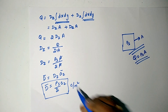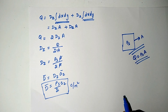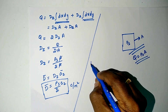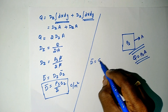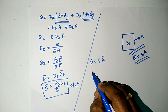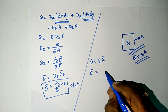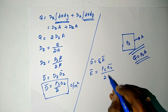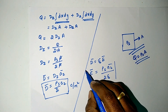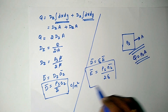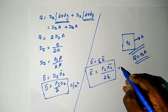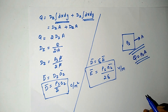The relationship between D and E vector is written as D vector equals ε₀ times E vector. So we can write E vector equals ρs az divided by 2ε₀. This is the expression for electric field intensity for an infinite sheet of charge, with units of volts per meter.